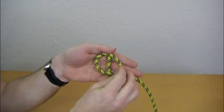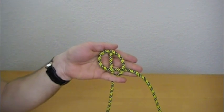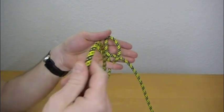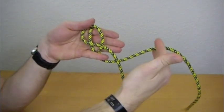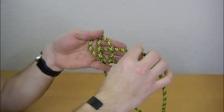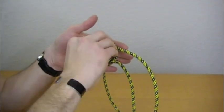What you've got here in the middle of your loop is a bar and that's important because the next step is going to be to bring your standing part down here, around the back of this, which is now your standing part, inside that bar, and back out.